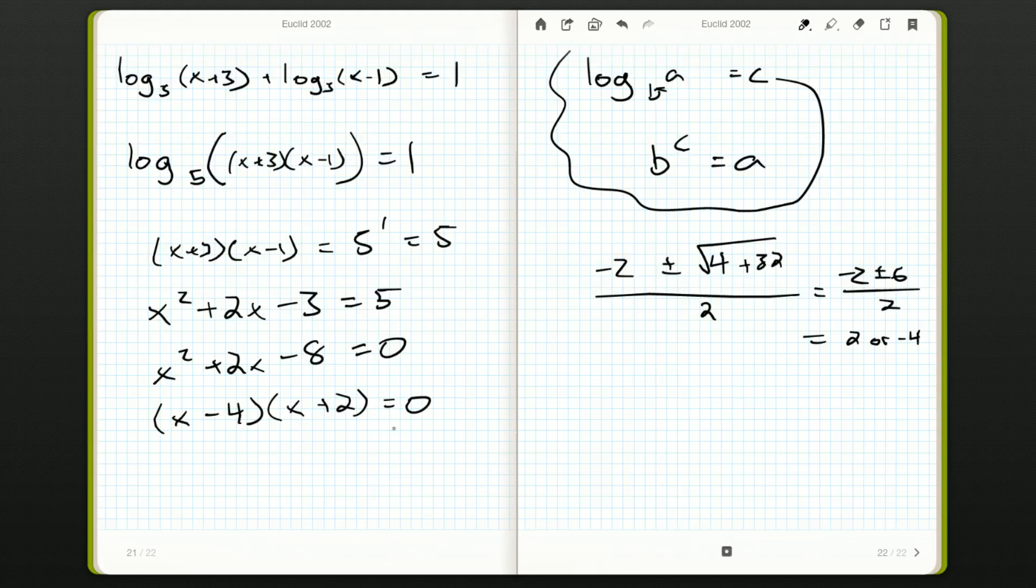When we do that, we see the only way to make this equation 0 is if one of these two factors is 0. Because there are no two non-zero numbers that multiply together to give you 0. So x minus 4 equals 0, or x equals 4. Or x plus 2 equals 0, so x equals negative 2. Those are our two possible answers.